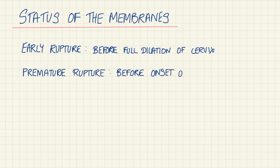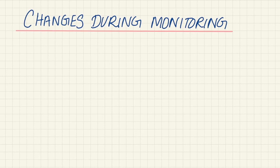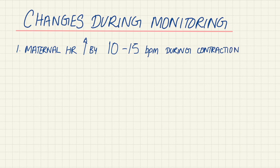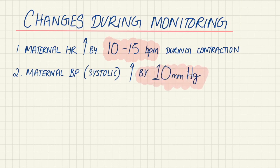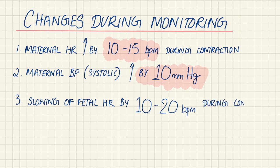What about management or changes during monitoring? Maternal heart rate usually increases by 10 to 15 beats per minute during each contraction. Maternal systolic blood pressure is raised by about 10 mmHg. Fetal heart rate usually decreases by 10 to 20 beats per minute but returns back to normal around 140.